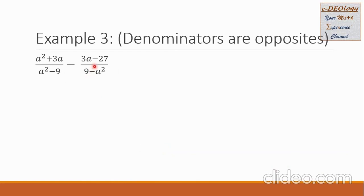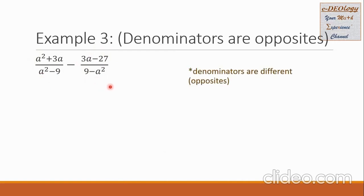Let us have Example 3. We have two rational expressions. The first is a squared plus 3a all over a squared minus 9, then minus the second rational expression, 3a minus 27 over 9 minus a squared. We can see that the denominators are different — in fact, they are opposite of one another.